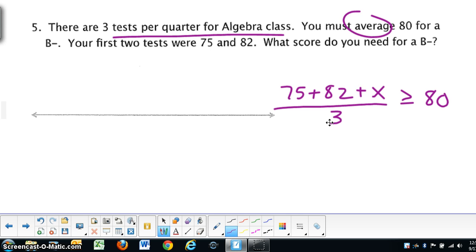Okay, so if we're going to solve for X, multiplying by 3 is your first step. Go ahead and push pause and solve. So hopefully, after you multiply by 3, you have 240. And then after subtracting, it is showing that we need a value of 83 or more on the next quiz in order to maintain a B-.